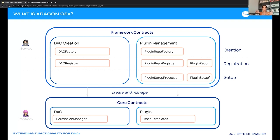The framework contracts are also divided by DAOs and plugins. In the DAO section we have a DAO factory and a DAO registry. For plugins we have the plugin factory to create plugins, the plugin registry, and then the plugin setup processor, which you can understand as an installer of a plugin into a specific DAO.